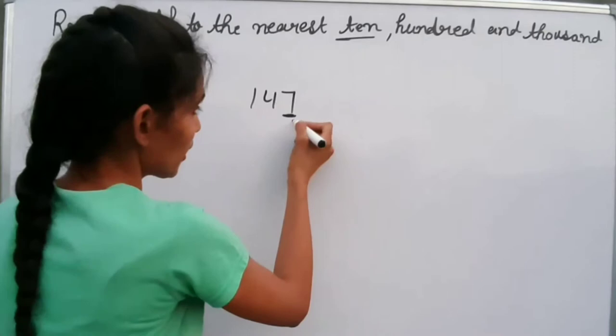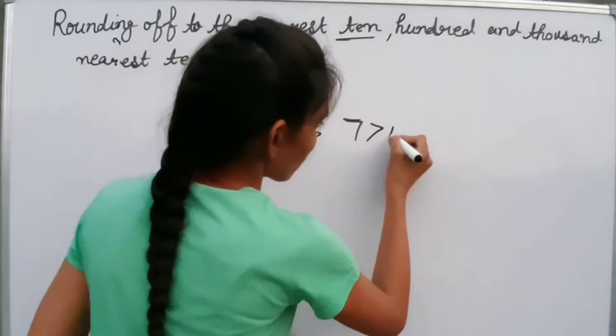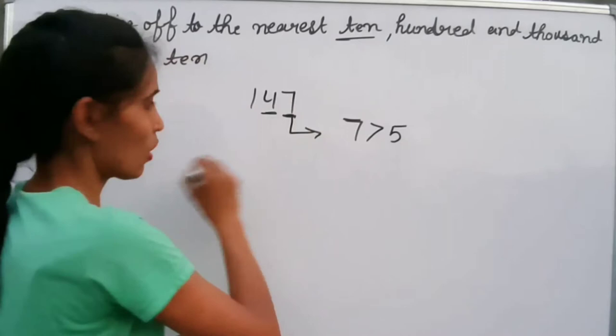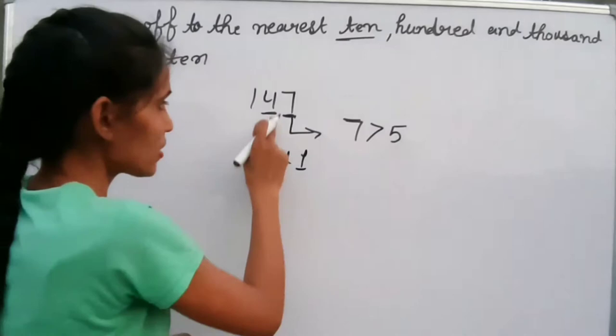Our digit is 7. We check whether 7 is greater than or less than 5. Since 7 is greater than 5, we add 1 to the tens place value. If the ones place value is less than 5, we do not add anything — it remains the same.